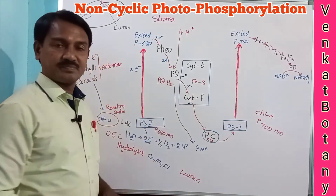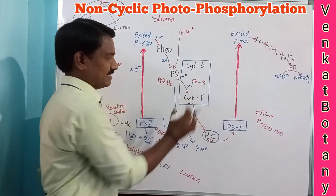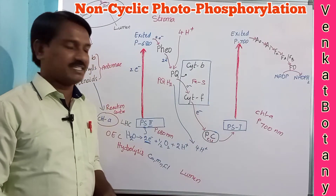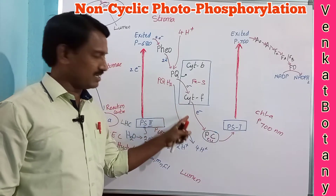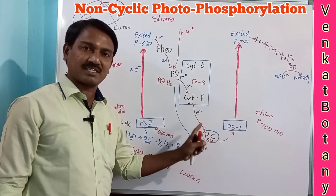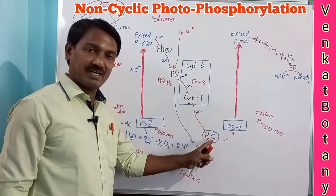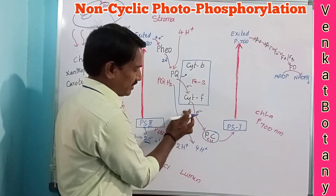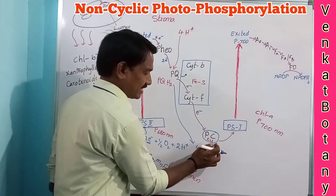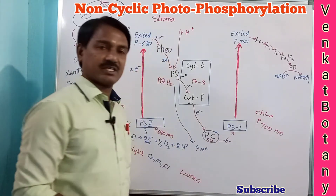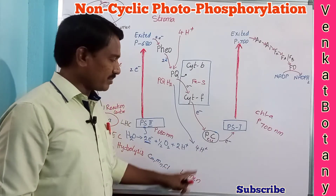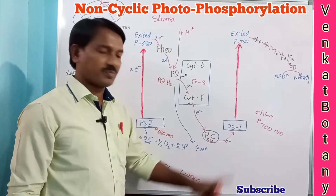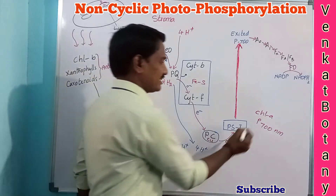The electrons near cytochrome bf complex are transferred to plastocyanin (PC), which is a mobile copper-containing electron carrier between PS1 and the cytochrome bf complex. Plastocyanin is present on the thylakoid membrane towards the lumen side. By receiving electrons from the bf complex, plastocyanin is reduced, and those electrons are transferred to PS1.